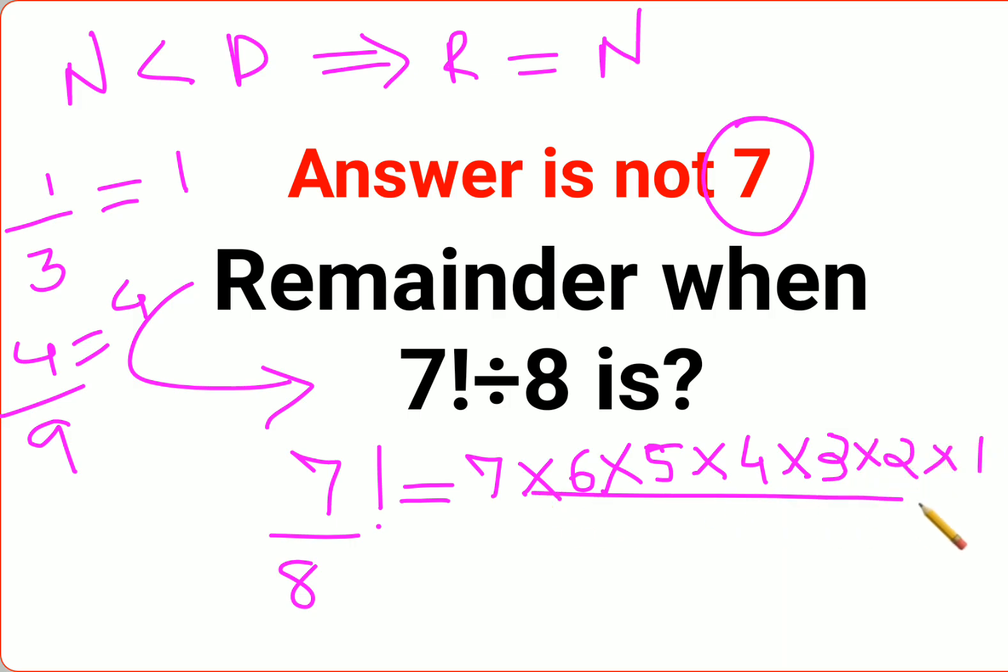So when you see this, 4 times 2 is 8, and this gets canceled. So basically 7 factorial is getting completely divided by 8. So the remainder for this one is supposed to be 0. I hope this is very clear to everyone.